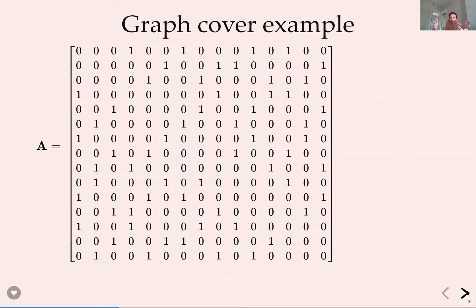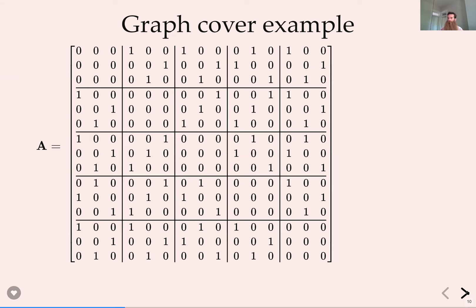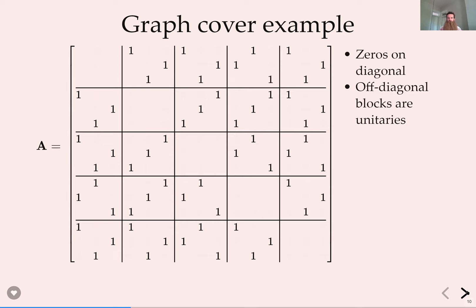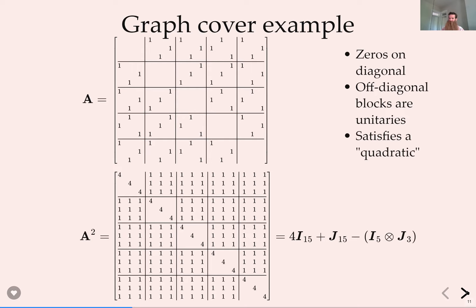Now let's look at something that is almost a signature matrix of an EITFF — it's actually a graph cover, and also a graph in its own right. It's a block matrix with zero blocks down the diagonal and permutation matrices on the off-diagonal blocks. This is an example of what's called a dracon. It's symmetric, so it's almost a signature matrix. The question is: does it satisfy a quadratic? And the answer is almost, but not quite — when I square it, I get a multiple of the identity plus some garbage. I need to fix this so that extra term disappears.